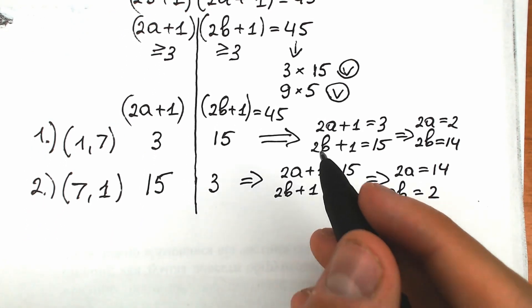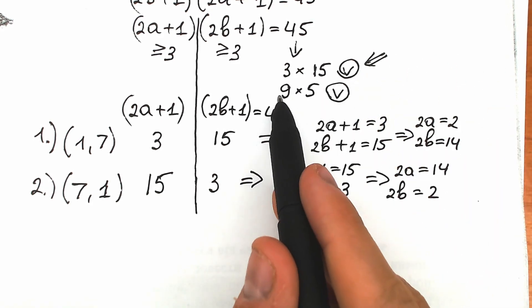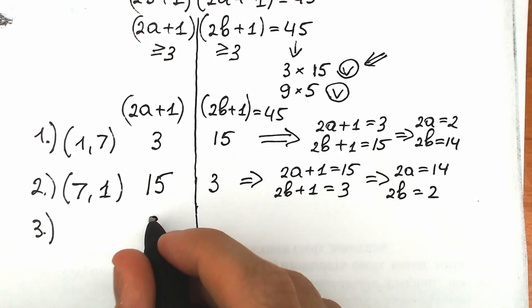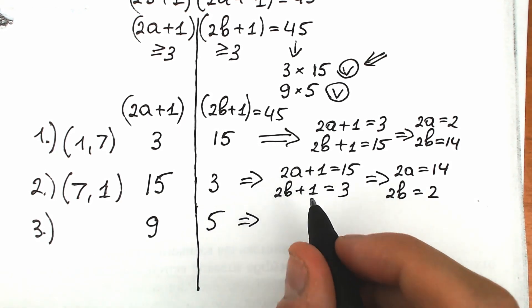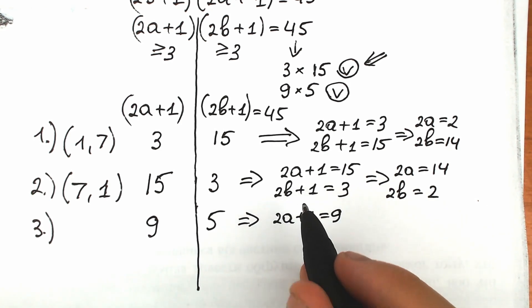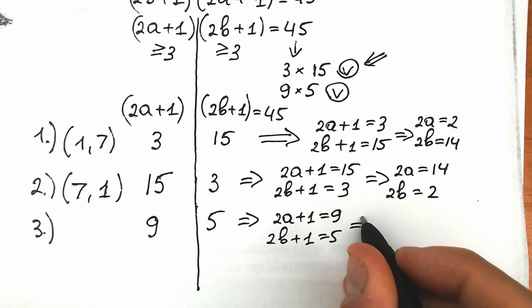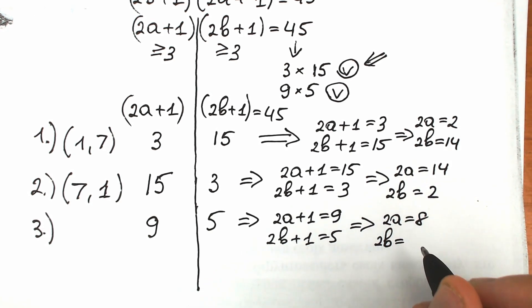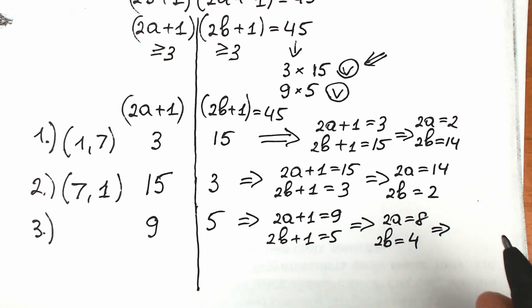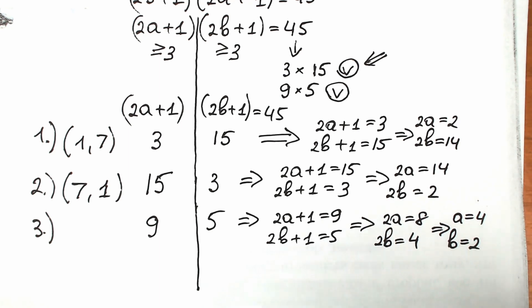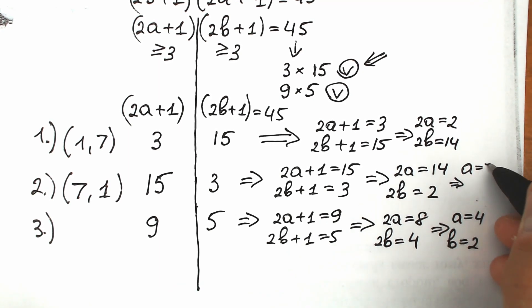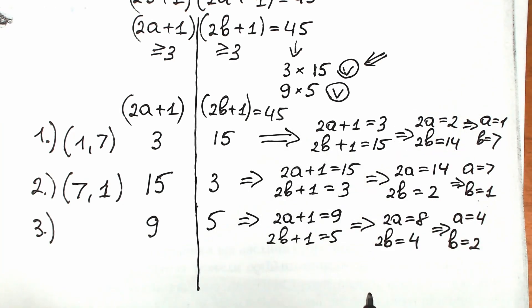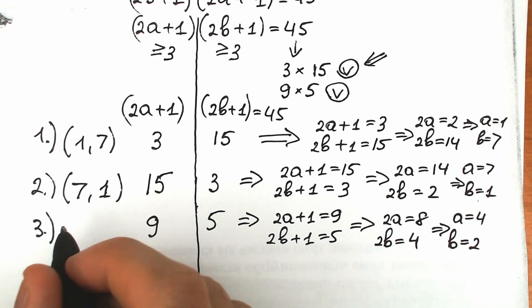Let's go to the third pair of solutions using 9 and 5. We set 2a plus 1 equal to 9 and 2b plus 1 equal to 5. Solving: 2a equals 8, so a equals 4; and 2b equals 4, so b equals 2. Our third pair of solutions is a equals 4 and b equals 2.